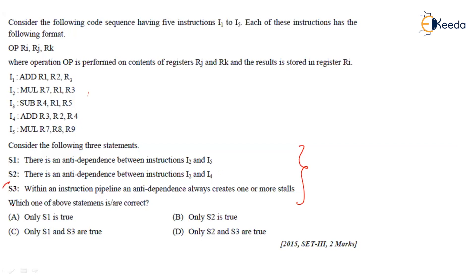We can fix S3 first. S3 is always true because whatever the dependence — whether it is anti-dependence or any other dependence — every time there is a dependence, there will definitely be a stall. There are three kinds of data dependencies: true dependency, anti-dependence, and output dependency.